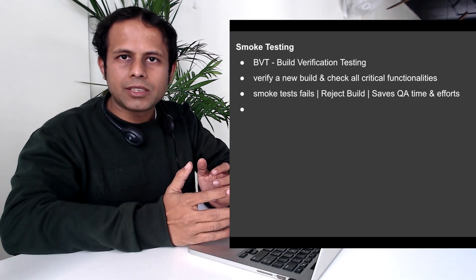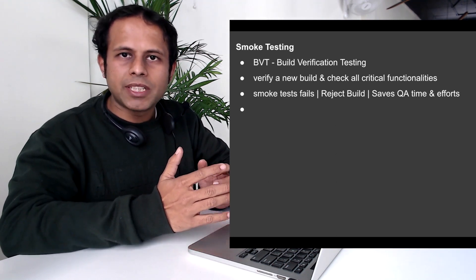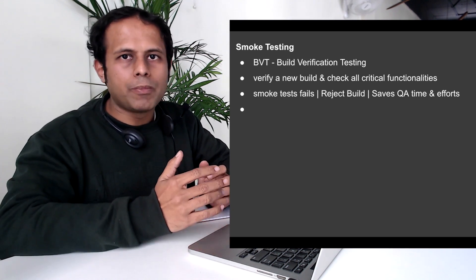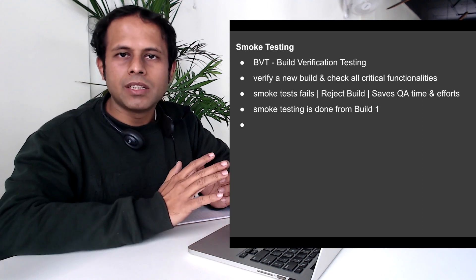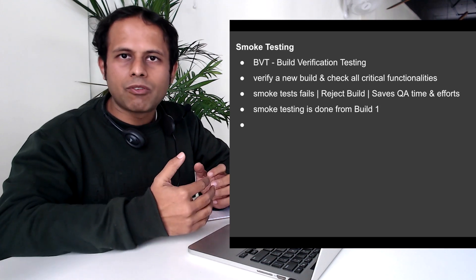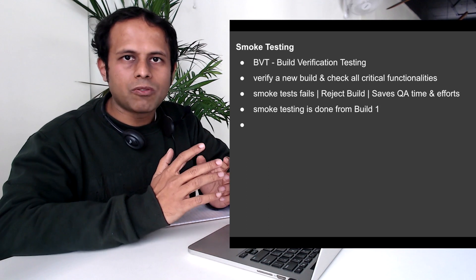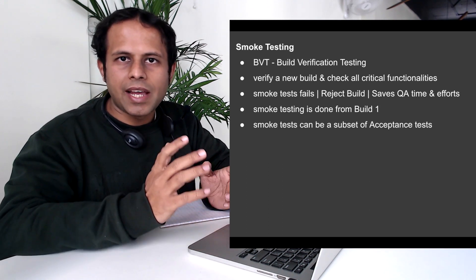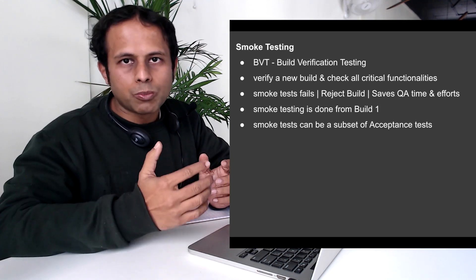The goal of smoke testing is to check and ensure that if there are any flaws in the build, it can be rejected and is not sent for further QA testing. Smoke testing can be done right from build number one — even if the application is not stable, we can still run smoke tests to check that critical functionalities are working. Smoke testing is a subset of acceptance testing.